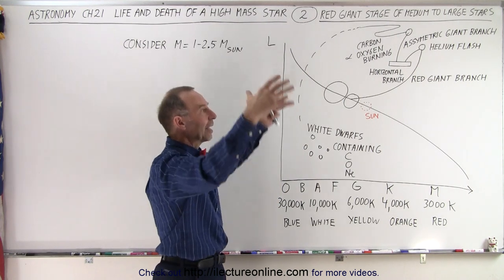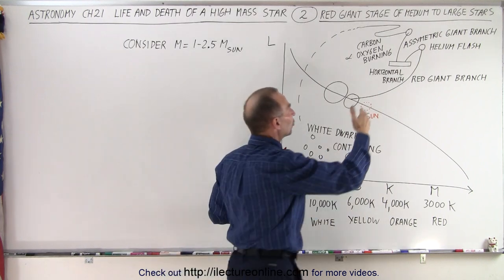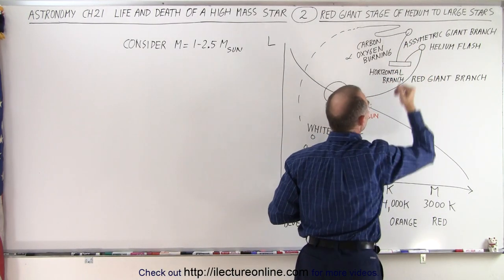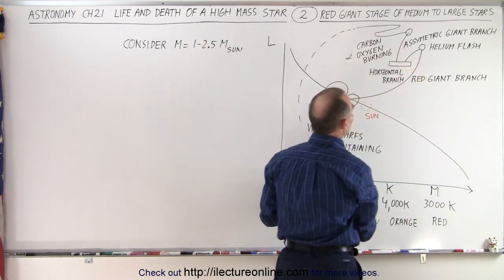And then around that, we have hydrogen burning into helium, the star begins to swell again, and it starts going up into the second giant branch, called the asymmetric giant branch, which is kind of parallel to the initial red giant branch.